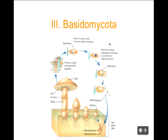The next division is Basidiomycota. All fungi in this phylum form basidiospores. Two individuals — the plus strain and minus strain — come together and send up a structure we call a mushroom. In the gills of the mushroom are the basidiospores. Organisms that form mushrooms and have basidiospores fall under Basidiomycota. They also form asexual spores that are either conidia or sporangiospores, but everyone in Basidiomycota forms basidiospores as their sexual spore.